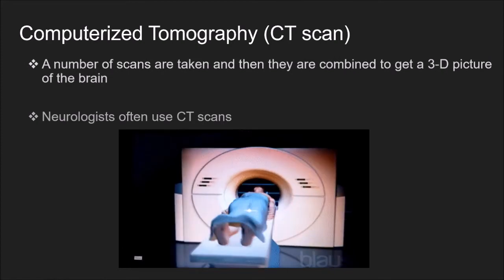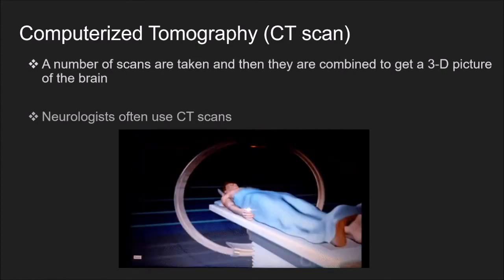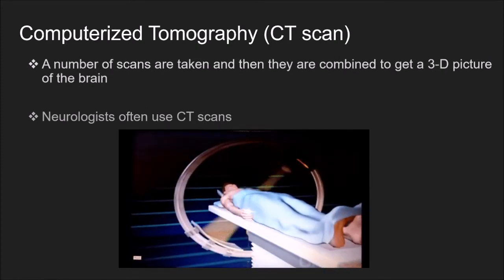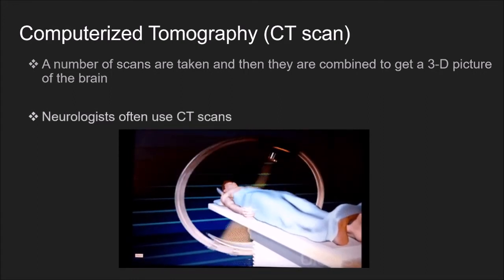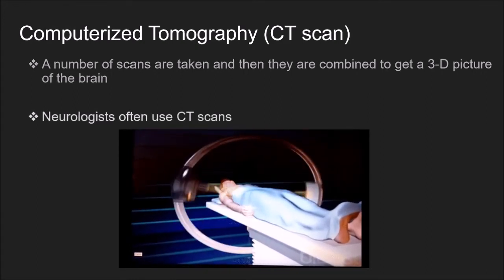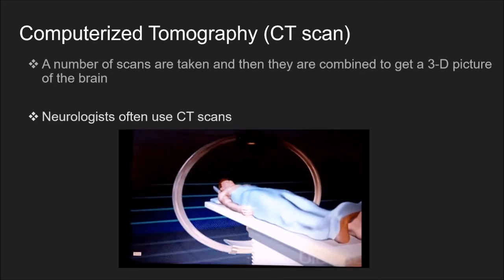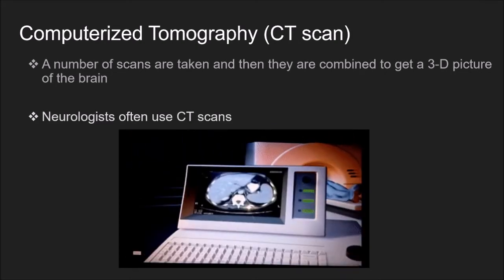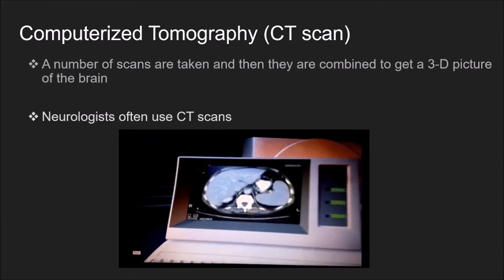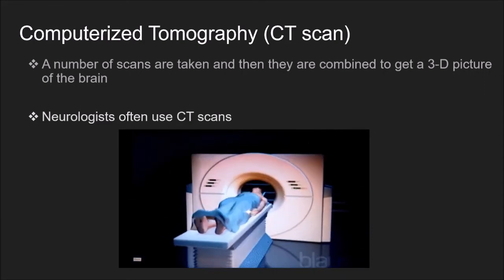All the photos are then collected by the computer and a CT scan of the brain is produced. A number of scans are taken and combined to get a 3D picture of the brain. Neurologists often use CT scans to diagnose blood clots, tumors, sclerosis, or any internal injury, and to decide if surgery is to be carried out.